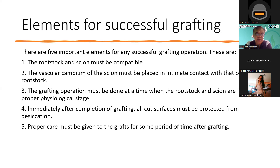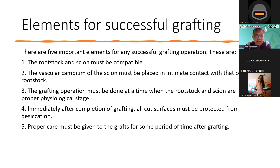Here are the elements for successful grafting. Number one is compatibility — the two must be compatible. Parang sa mag-asawa, dapat compatible. For example, with rambutan: if you have a native variety and you graft it with R5 or RR variety, that's compatible. But if you try to graft a mango onto it, maybe they are not compatible. There are some types of plants that, being in the same family, can be grafted together.